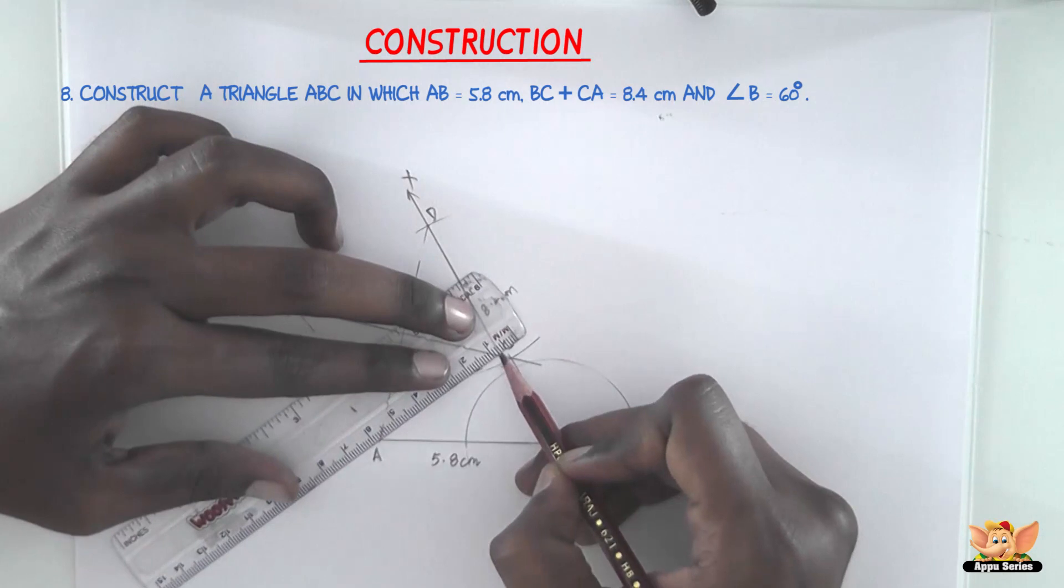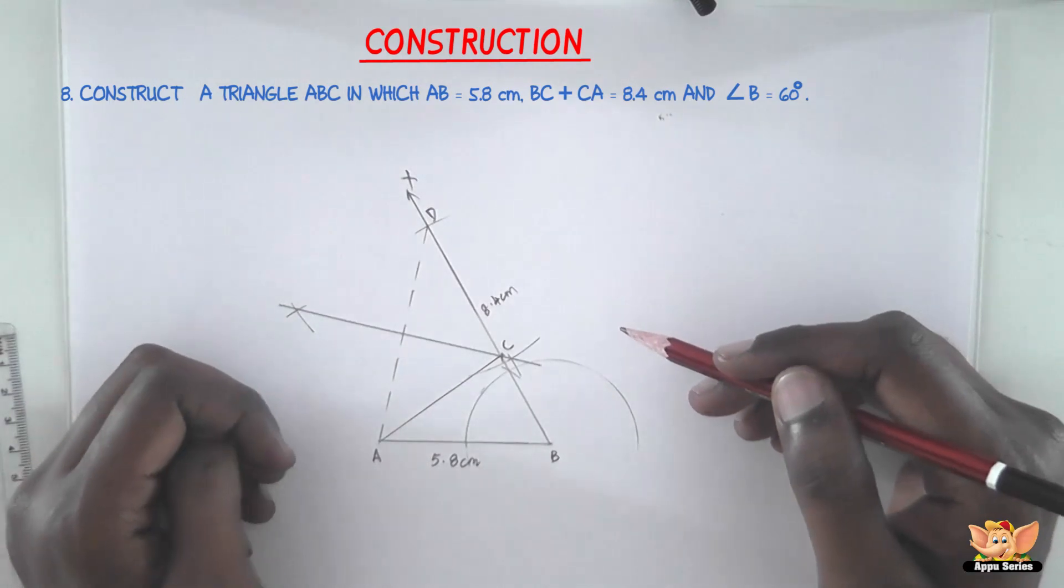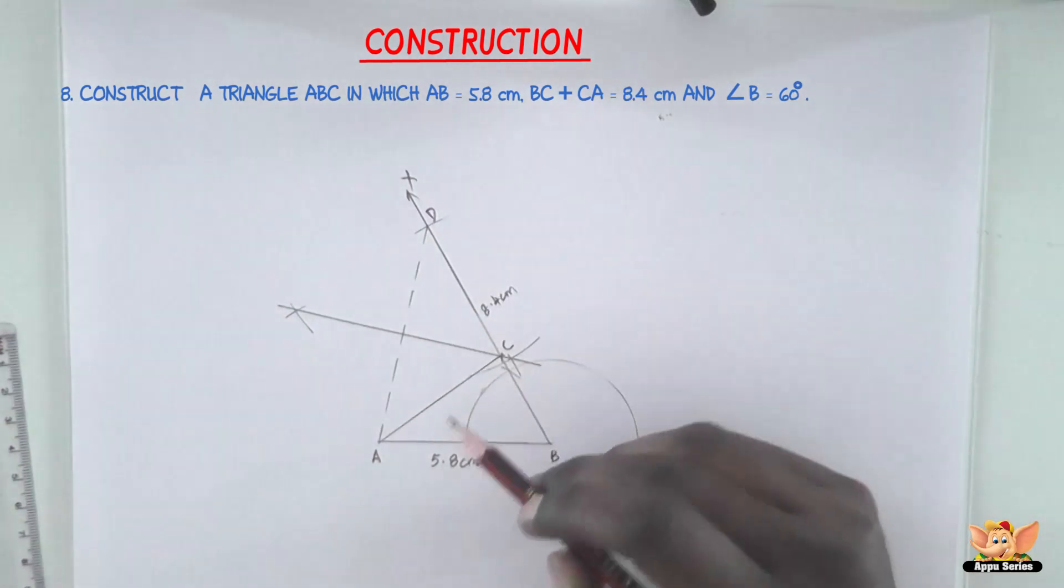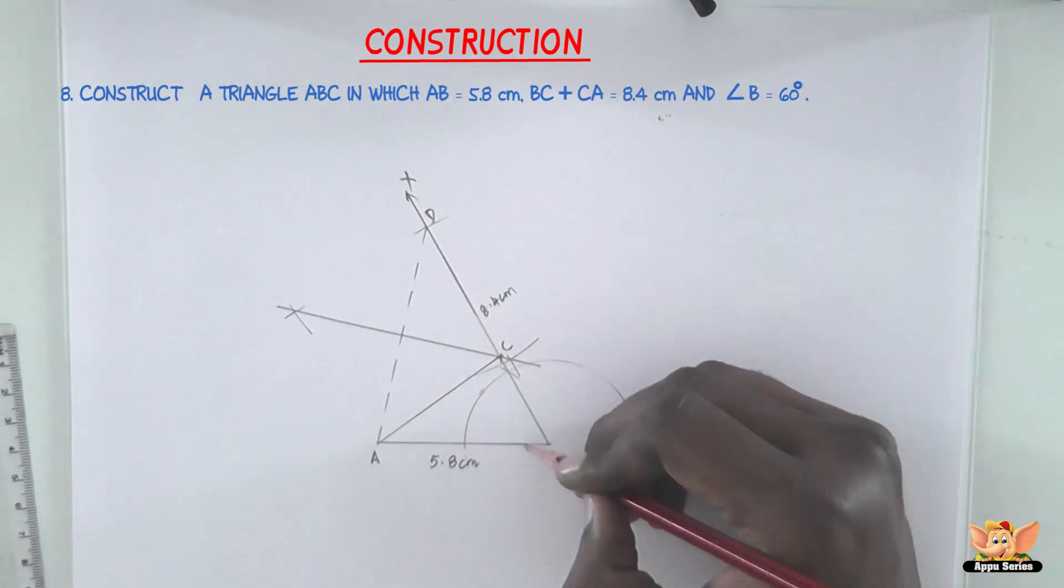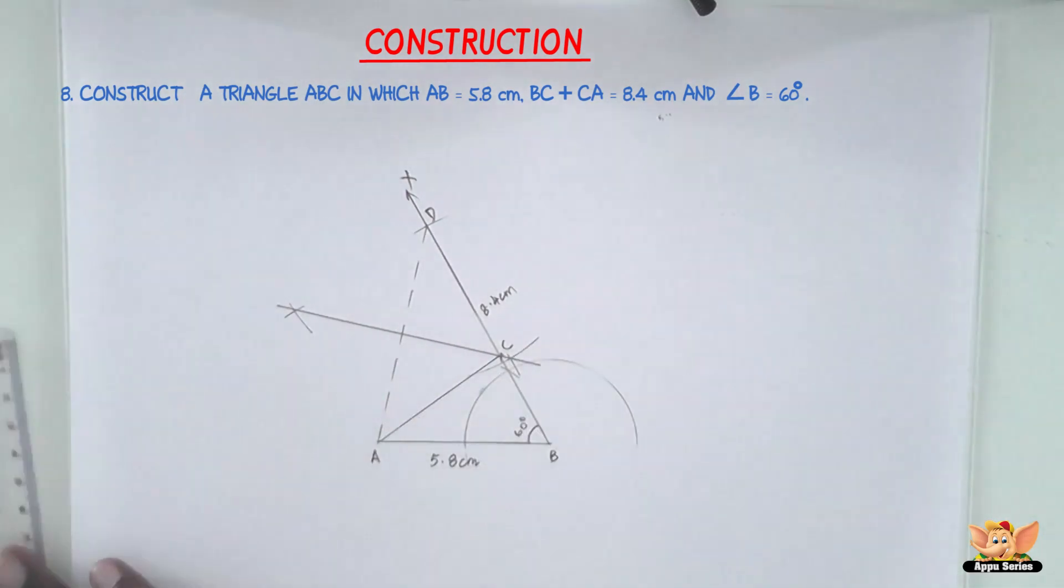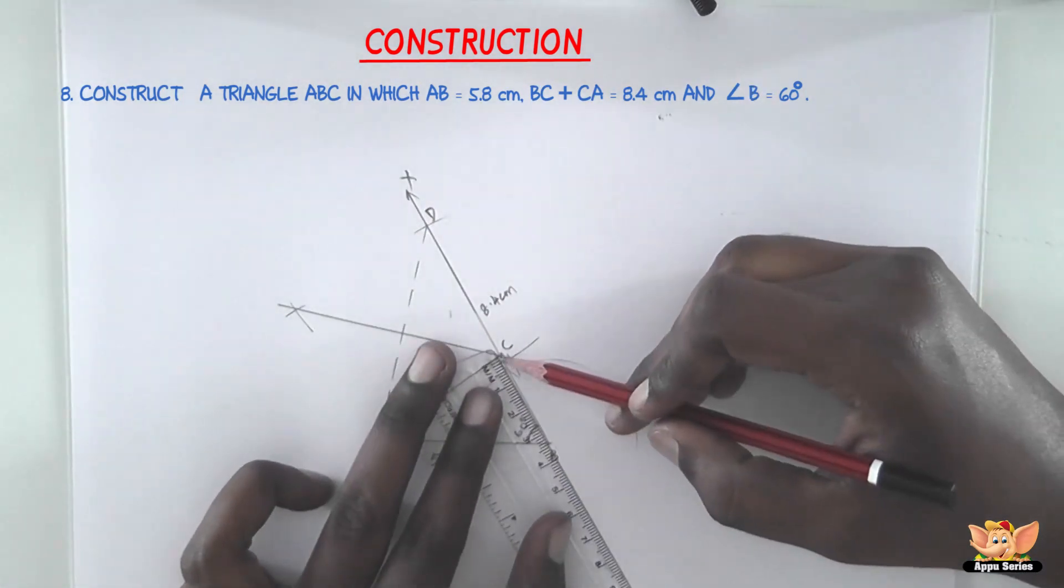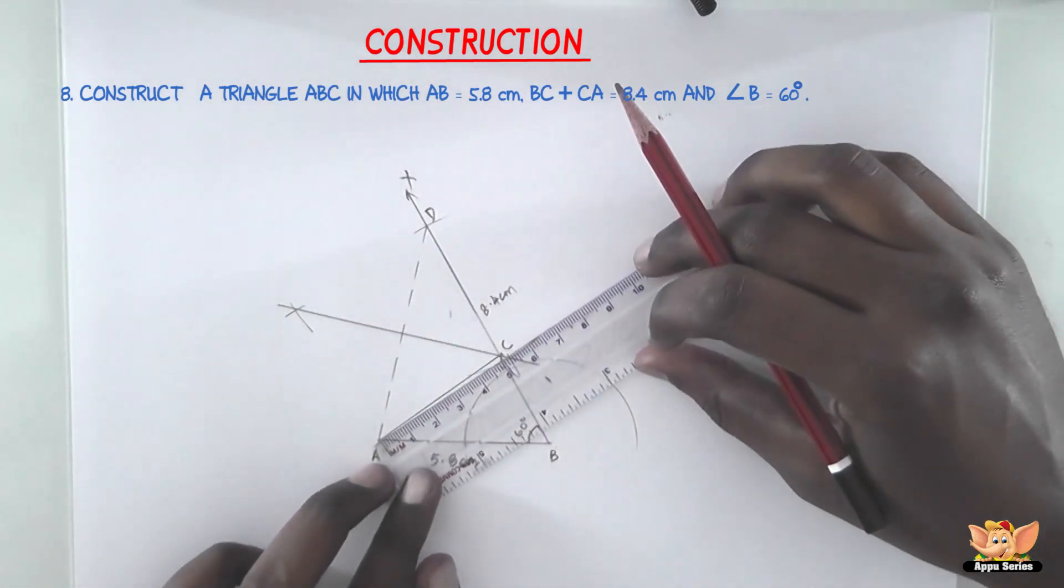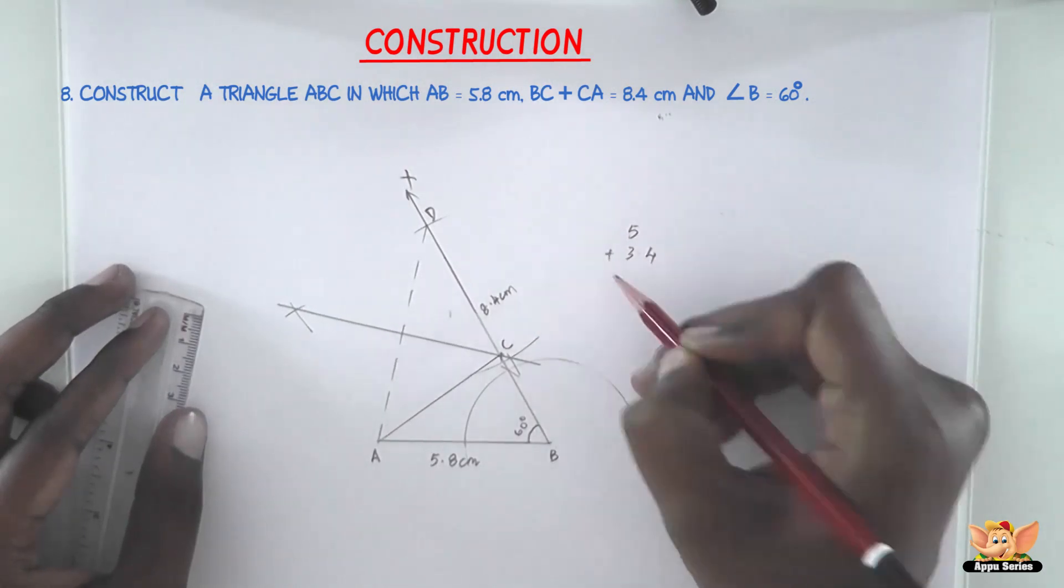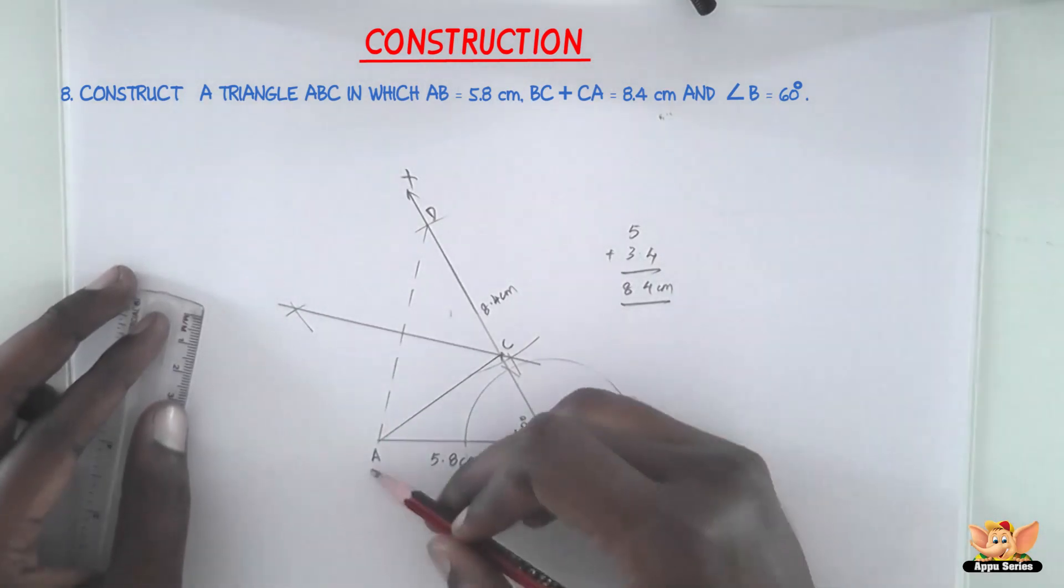ABC is the triangle required. AB is 5.8 cm. According to the question, the sum of the other two sides is 8.4 cm, and the base angle is 60 degrees. Now BC plus AC should be 8.4 cm. Let's verify: BC is 3.4 cm and AC is 5 cm. So 5 plus 3.4 equals 8.4 cm. Therefore, ABC is the triangle needed.